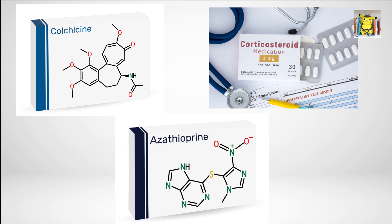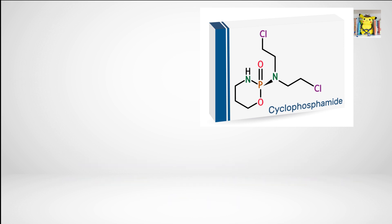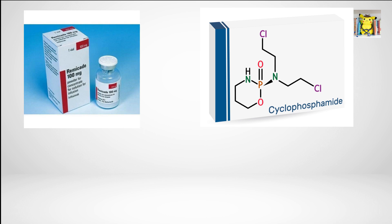Azathioprine, another immunosuppressive agent, inhibits T-cells and can be used in conjunction with steroids to control disease activity. Cyclophosphamide is reserved for life-threatening conditions like cerebral vasculitis and interferes with rapidly dividing cells, including lymphocytes. Biological agents like infliximab or adalimumab, targeting tumor necrosis factor alpha, may also be used.